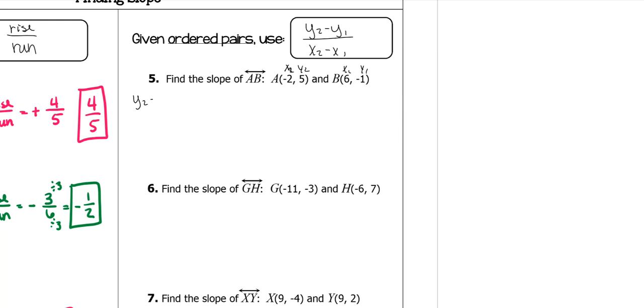So y2 minus y1 over x2 minus x1. My y2 is 5 minus my y1 is negative 1. My x2 is negative 2 minus my x1, which is 6. 5 minus a negative 1. This is plus, which means it's 6.